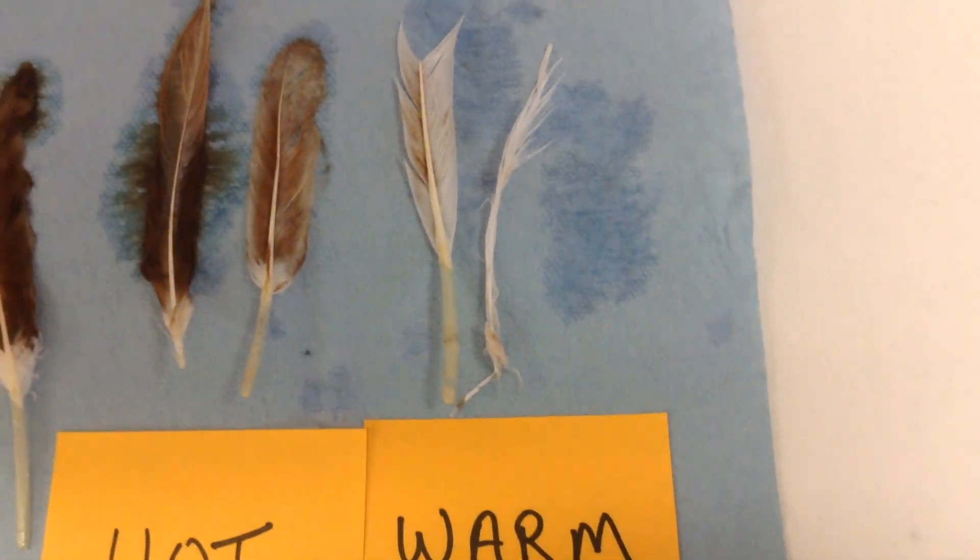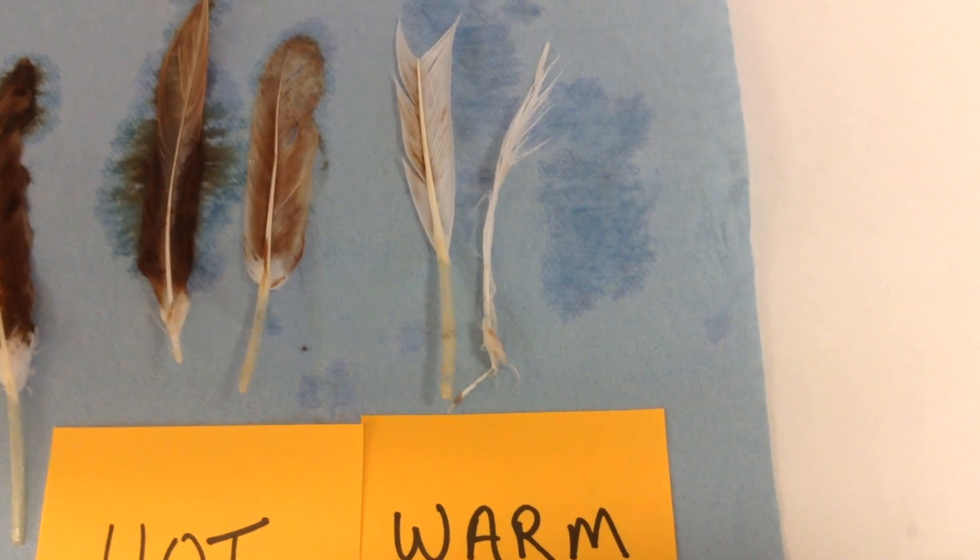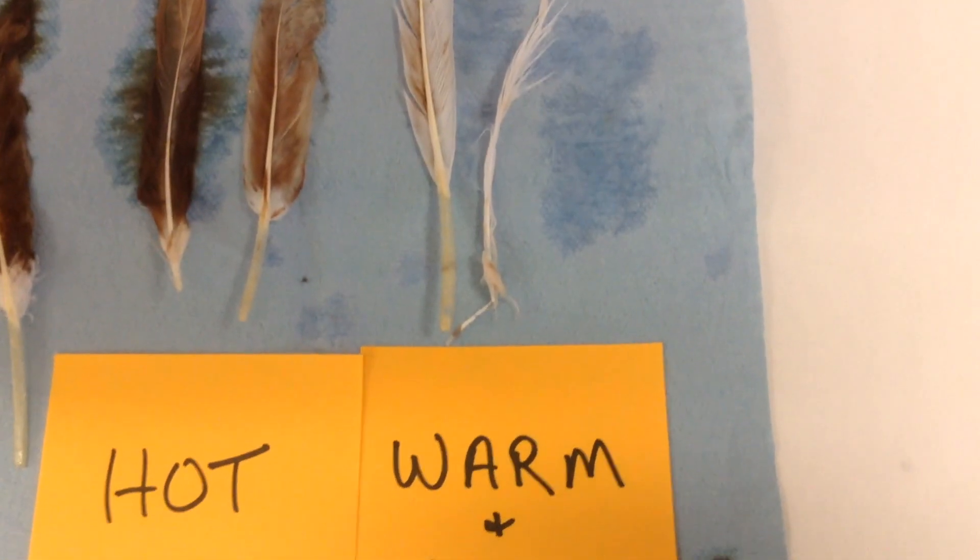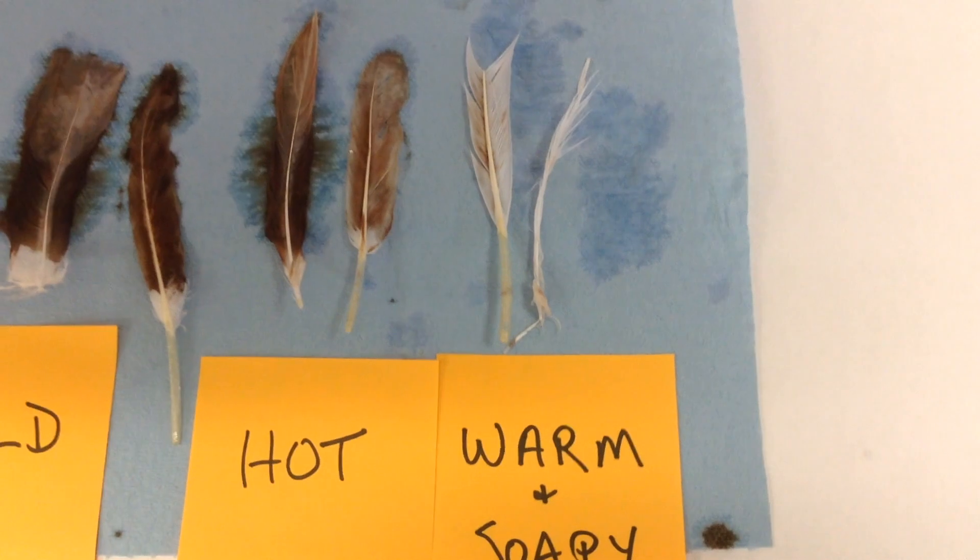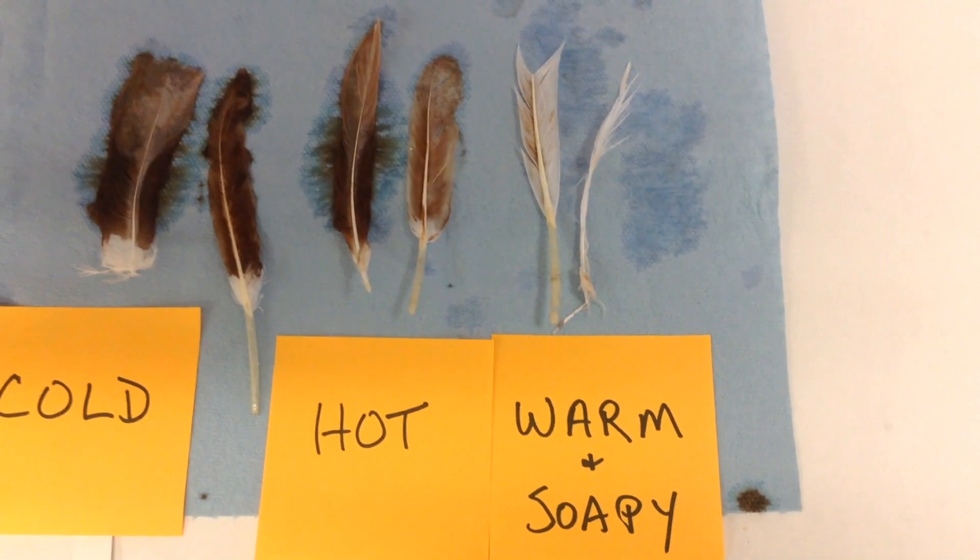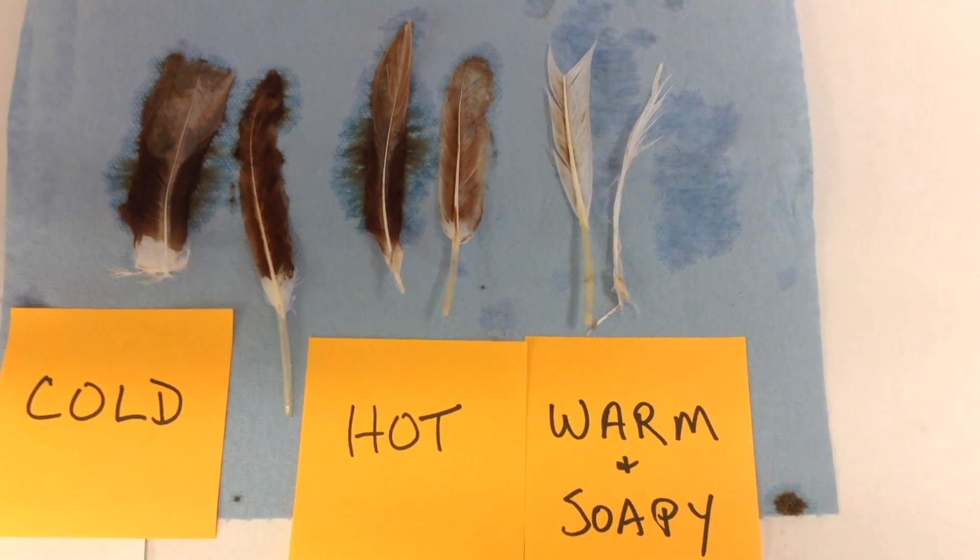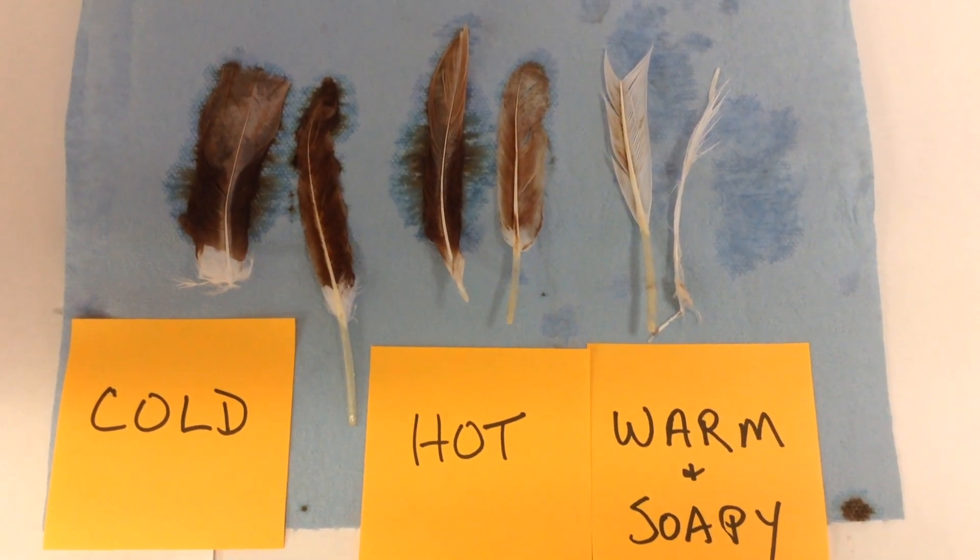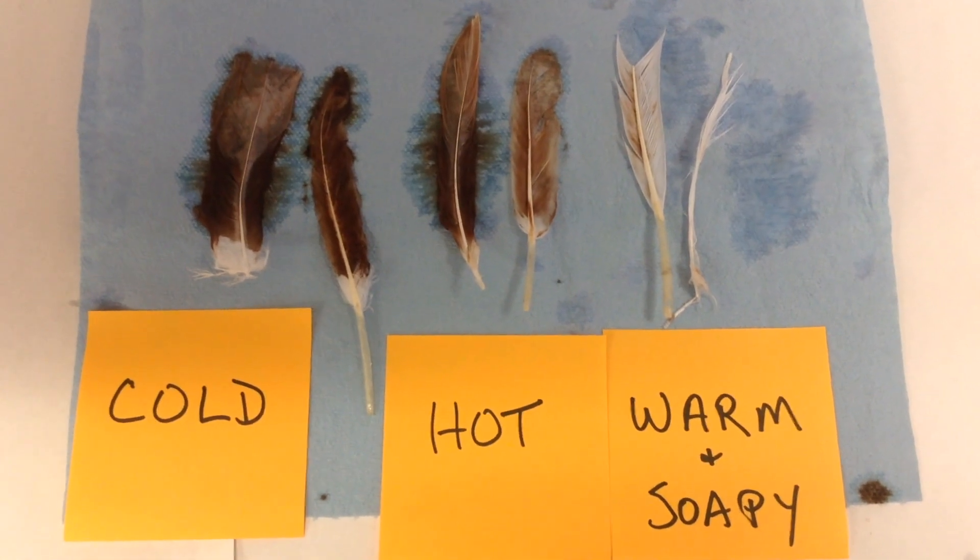The warm soapy water worked pretty well, but you can see there is still some left. And those feathers are still really soapy. That would be pretty bad for the birds when they are trying to preen and put their own natural oil back on the feathers. So really it is just better if the birds don't encounter an oil spill at all.